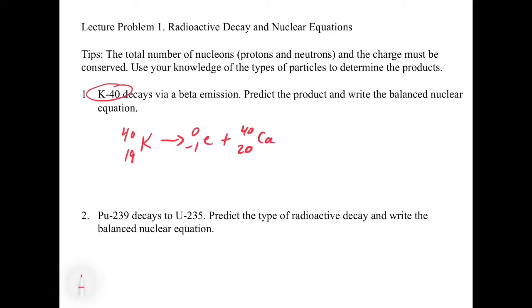If you look at the n-to-z ratio, if you calculate the n-to-z ratio here, this is going to be 21 over 19, whereas here it's 21 over 20. You can see that this n-to-z ratio is greater than 1 and is not right.